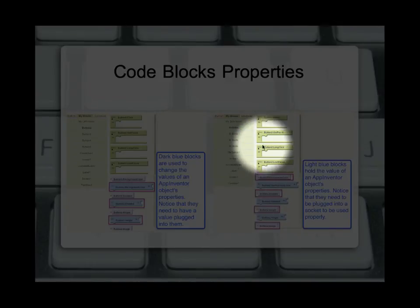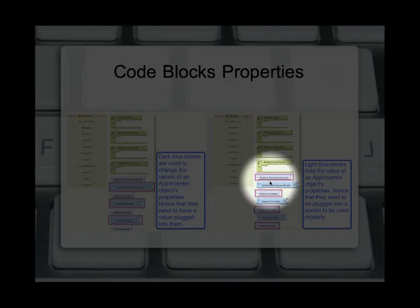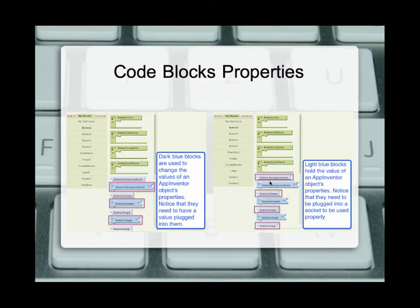In this case, we have button2.backgroundColor. The dot is used to indicate that the background color belongs to the button2 object. On the setter side, we have set button2.backgroundColor — the dot indicates it belongs to that object. Because of this relationship, we can identify which one we're actually changing. This is why we want to name things that make sense: button2 we won't remember in five days, but interestButton or funButton tells us more about what it's actually talking about.